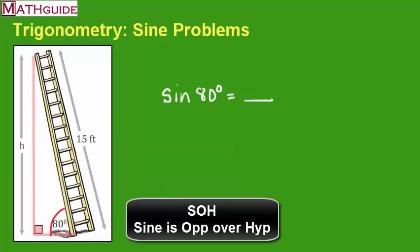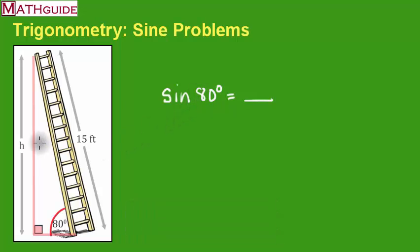So if we continue on with this problem, since we know we're dealing with the sine function, we're going to put the opposite over the hypotenuse, which is 15. I'm using the letter H here to represent the height up alongside the wall. That is not the hypotenuse. Just to clarify there, height up the wall, 15 is the hypotenuse. So we're putting opposite over hypotenuse, opposite over hypotenuse.